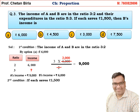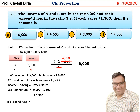Now the second condition: if each saves rupees 1500, income minus saving gives expenditure. A's expenditure = 9000 − 1500 = 7500 rupees. B's expenditure = 6000 − 1500 = 4500 rupees.